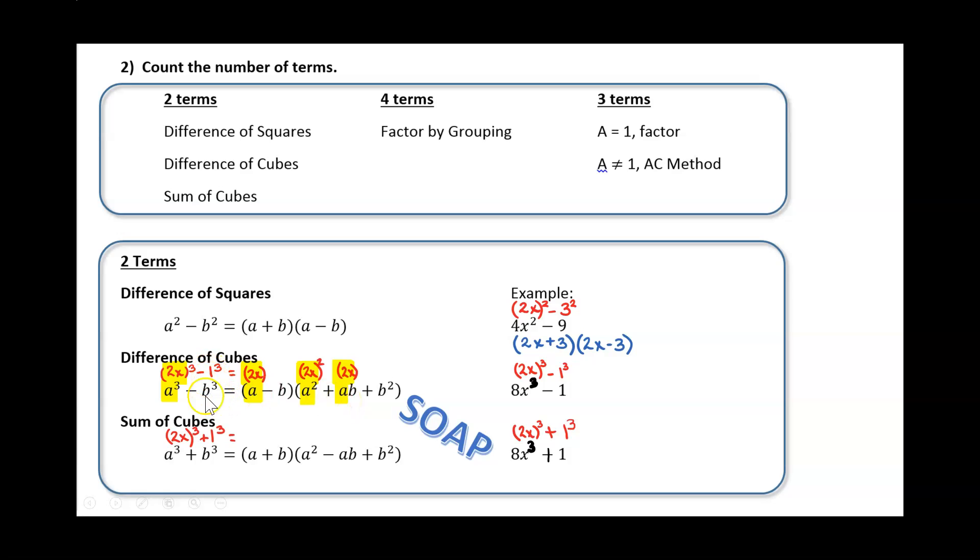Then b is 1, so let's go back and let's put in 1 for every b value. So you can see 1 in for b, 1 in for b, 1 in for b. So if we simplify that, we're going to have 2x minus 1 for our first term. 2x squared would give us 4x squared. 2x times 1 would be 2x, and 1 squared is 1, so that would be 4x squared plus 2x plus 1.